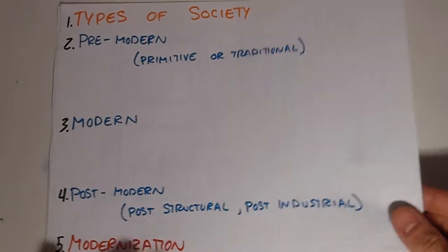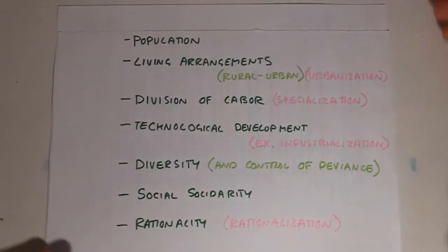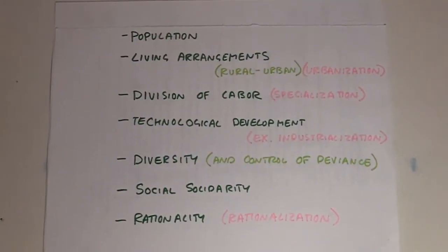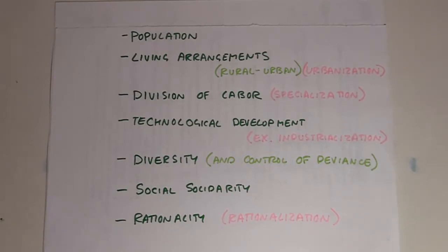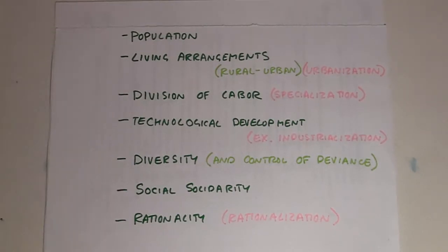Those characteristics include, if you've watched the other videos: population, living arrangements, division of labor, technological development, diversity, social solidarity, and rationality. The basic idea being that differences in these characteristics influence the way the society works and the experience of people living within that society.